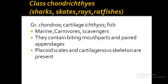Moving to class Chondrichthyes: the word has been derived from two Greek words, 'chondros' meaning cartilage and 'ichthys' meaning fish. These fishes have a skeleton that is mainly made up of cartilage — no bony structure is present. Members of this class include sharks, skates, rays, and ratfishes. They are marine, carnivores, and scavengers.